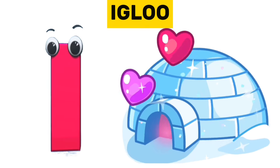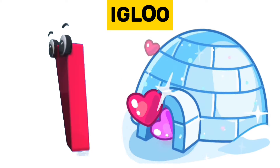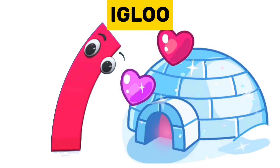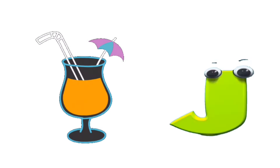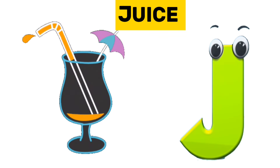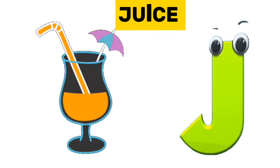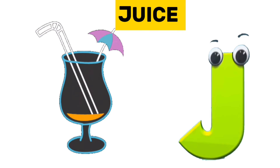I is for igloo. I, i, igloo. J is for juice. J, j, juice.